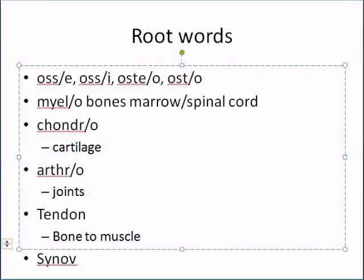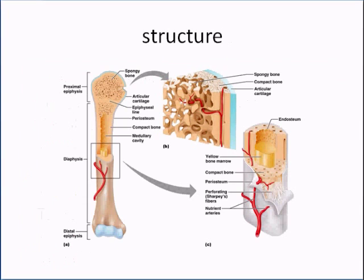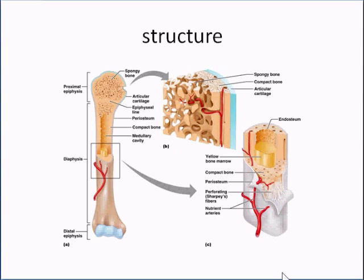This is the general structure of a long bone. At the bottom you have the epiphysis and the diaphysis. In the middle you have the medullary cavity. We're not going too deep into that — we're really just covering general terms here.